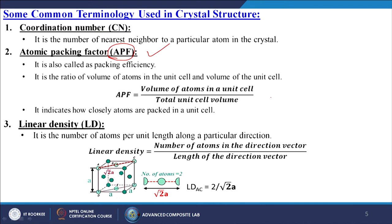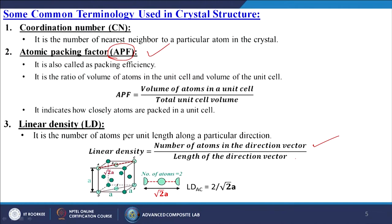Linear density is the number of atoms per unit length along a particular direction. Linear density equals the number of atoms in the direction vector divided by the length of the direction vector. For example, considering points A and C in a cubic structure, the length of the direction vector is √2·A. The number of atoms is half plus one plus half, giving 2 total atoms, so the linear density is 2/(√2·A).